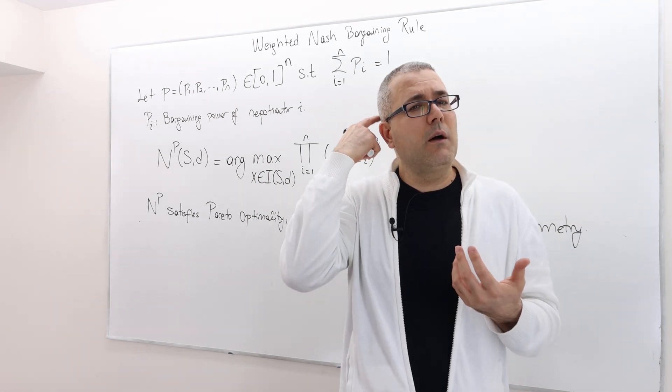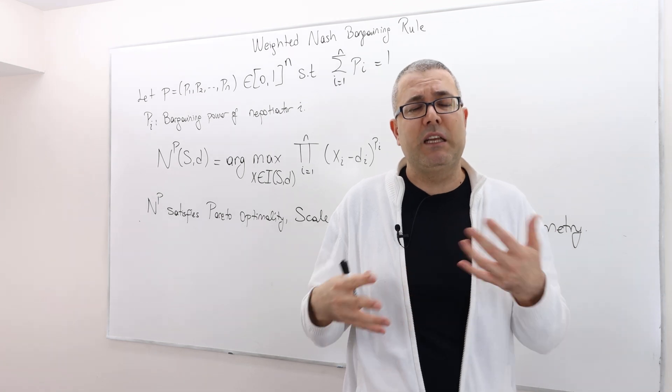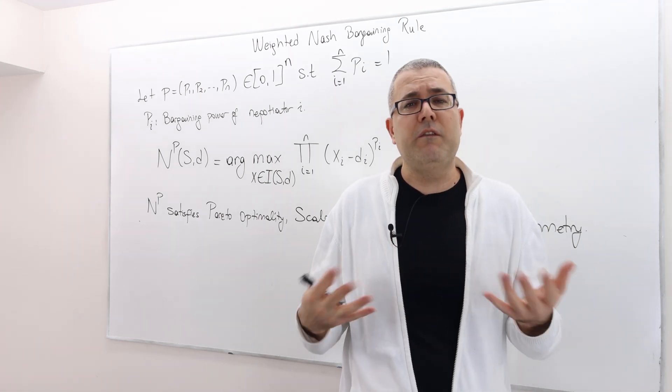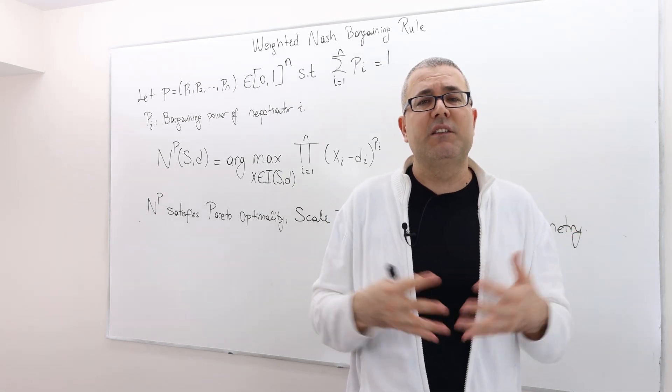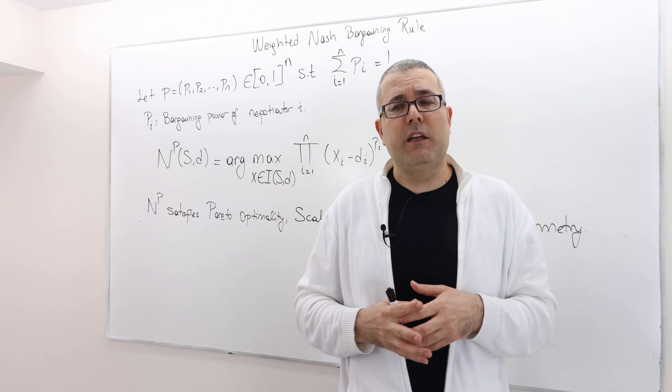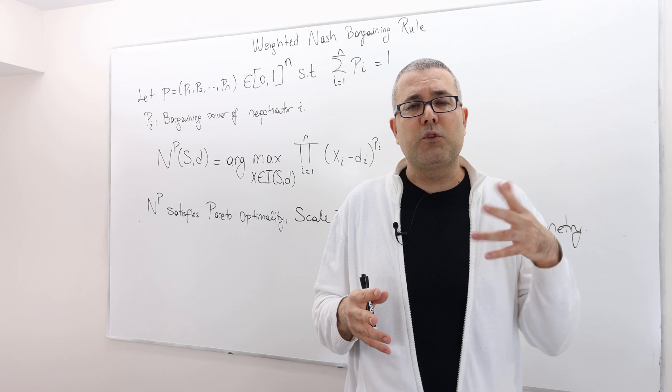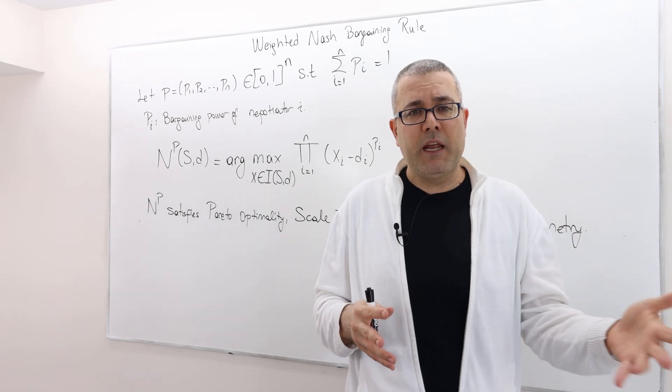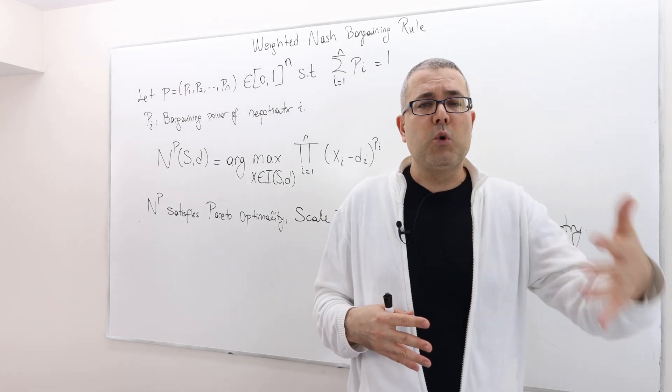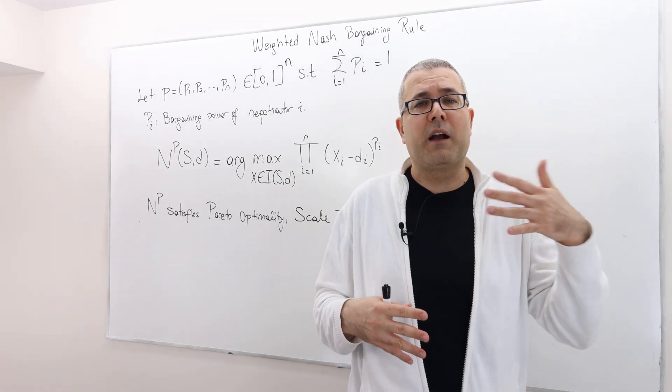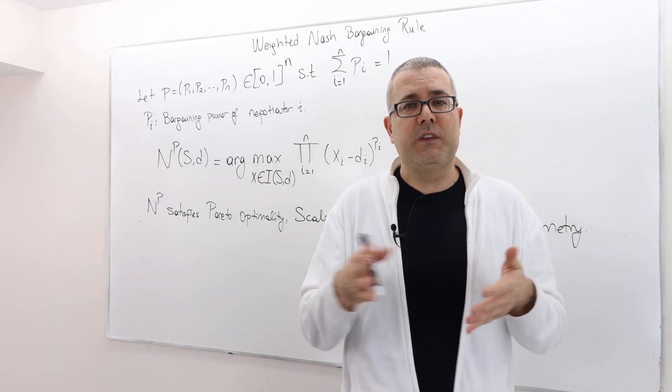We know that the Nash bargaining rule is a symmetric rule. It treats players symmetrically if the bargaining game is symmetric. But what if the rule that is applied in reality is not symmetric? Or alternatively, think of a situation where you would like to positively discriminate one party or one negotiator over others. And so you would like to give him or her more bargaining power and then calculate how to distribute the surplus.